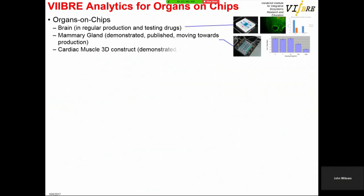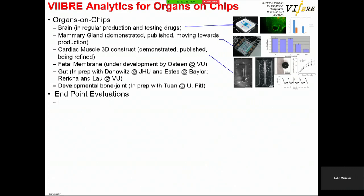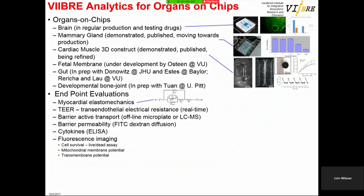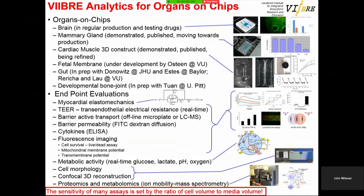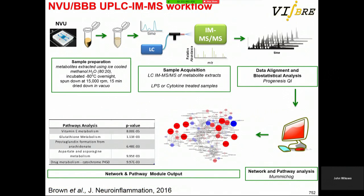We have the brain on a chip with the mammary gland, with the coupled system and the data we acquire. Endpoint evaluations can be everything from elastomechanics to quantities measured with the brain on a chip — metabolic activity, and most importantly proteomics and metabolomics. The workflow allows you to take NVU effluent, run it through mass spectrometry, develop a metabolic network, and identify axis pathways. This has just been published.